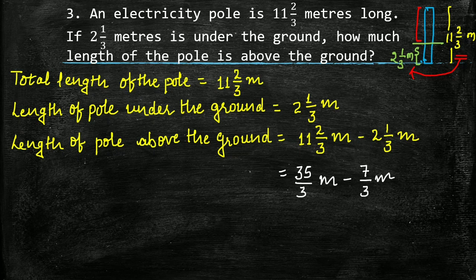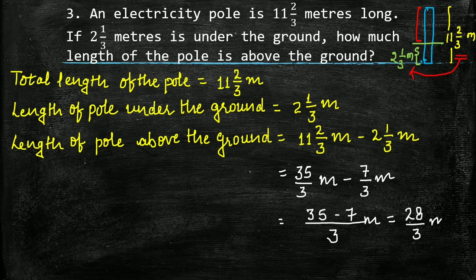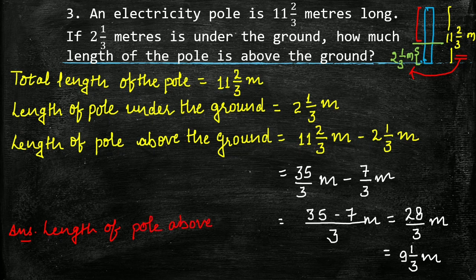Both are like fractions, so we can directly subtract their numerators. Write 3 as the common denominator: 35 minus 7 upon 3 meters, which equals 28 upon 3 meters, or it can be written as 9 whole 1 upon 3 meters. The answer is: length of pole above the ground is equal to 9 whole 1 upon 3 meters.